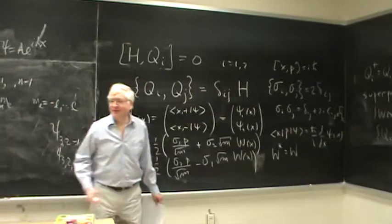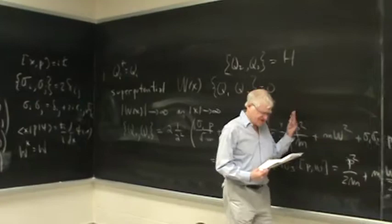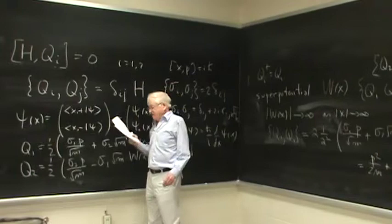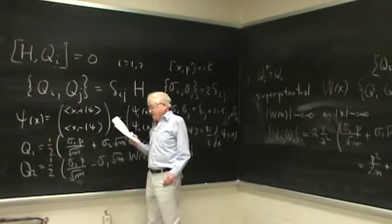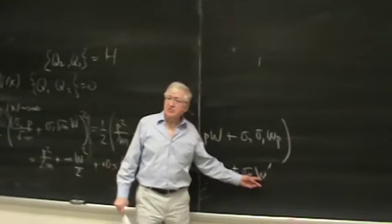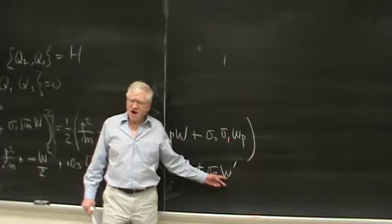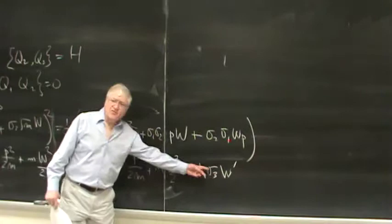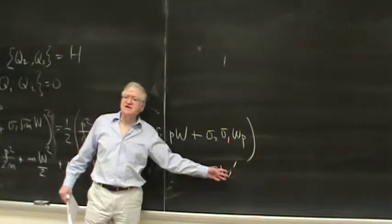This is called the supersymmetry algebra for quantum mechanics, and it has this quite nice form. So is W' like a force? Well, the classical force would be the derivative of the whole potential W², and then there's this spin-dependent term. That's the full potential structure.